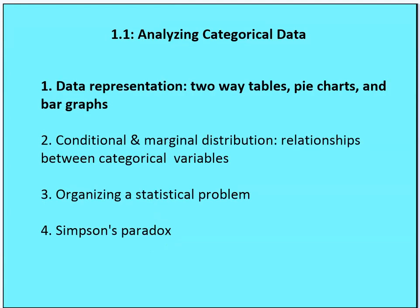There are four things we want to go through: representing data, two-way tables, pie charts, and bar graphs — some of the ins and outs, dos and don'ts with each of these. We want to talk about conditional and marginal distribution and relationships between categorical variables, which will take up most of our time. We'll also talk about organizing a statistical problem — the framework for generating free responses for AP questions: state, plan, do, and conclude — and briefly, Simpson's paradox.